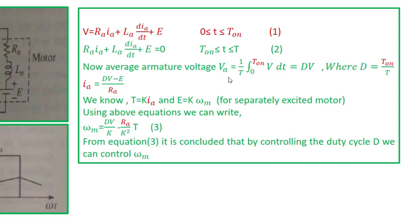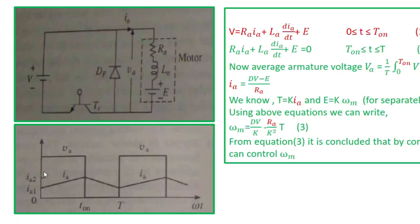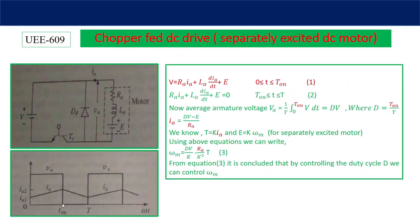The average armature voltage is (1/T) × integral from 0 to TON of V dt, because only during the ON period is voltage present — during OFF period it is zero. This gives VA(avg) = D×V, where D = TON/T is the duty cycle of the switch. Therefore average armature current IA = (D×V − E) / RA, since the average inductor voltage is zero and does not appear in the equation.